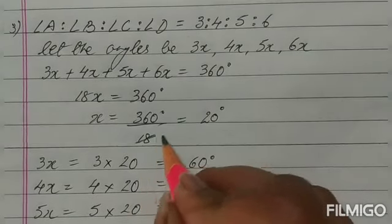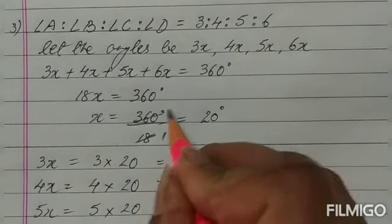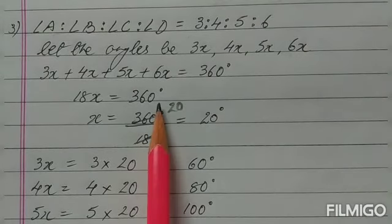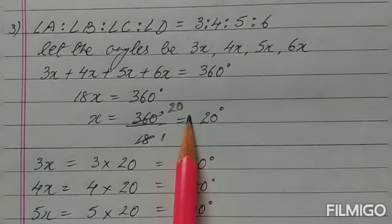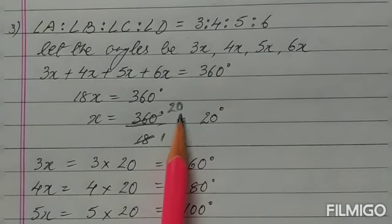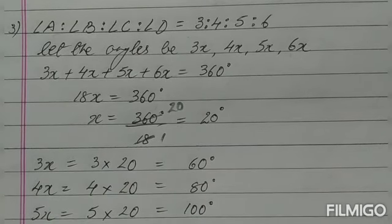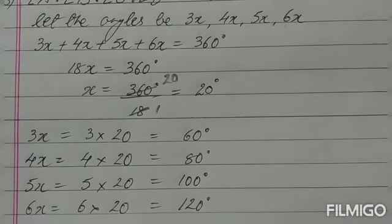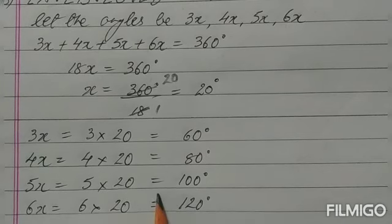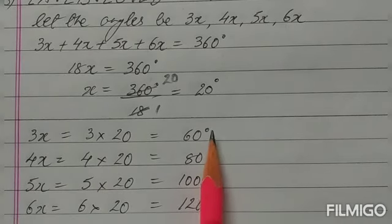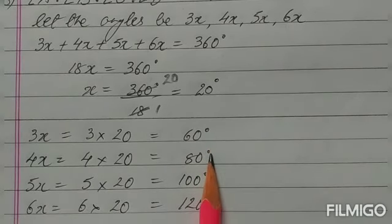The value of X is 20. Now putting the value of X into all four angles — 3X, 4X, 5X, and 6X — the angles are 60, 80, 100, and 120 degrees.